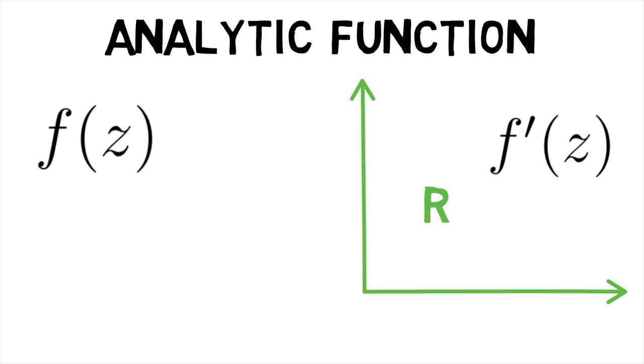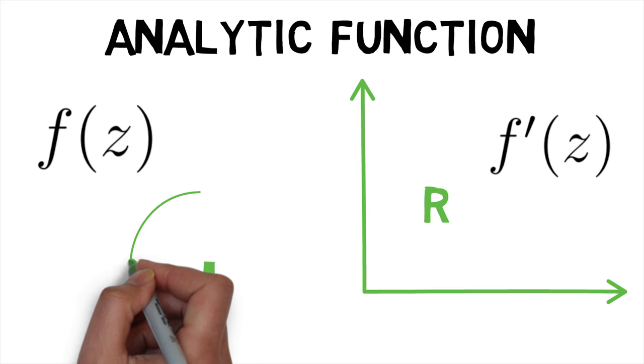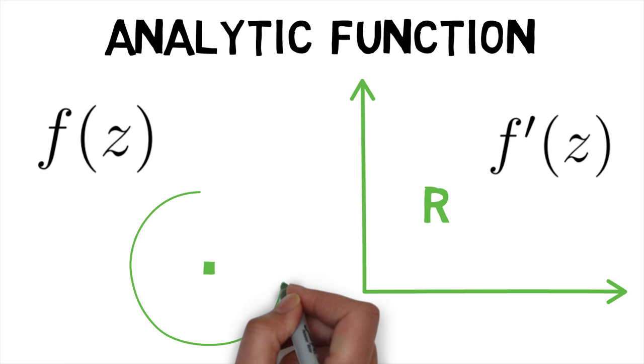Also, a function f is said to be analytic at a point z if z is an interior point of some region where f is analytic. That is, the concept of analytic function at a point implies that the function is analytic in some circle with its center at this point.